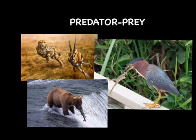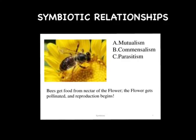Some organisms are both predator and prey. A symbiotic relationship is when two organisms of different species — whether two different plant species, two different animal species, or a plant and an animal species — interact in a long-term relationship. This is called symbiosis.